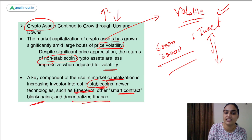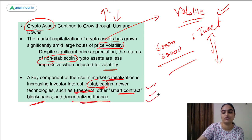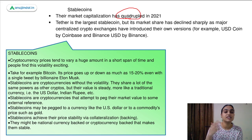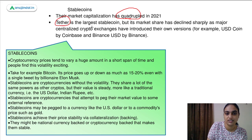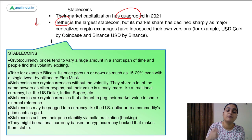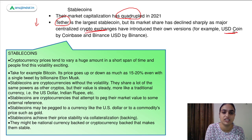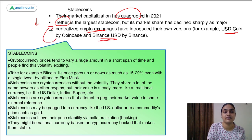Let's discuss each one. First, talking about stablecoins — their market capitalization has quadrupled. Tether is the largest stablecoin, although recently we are seeing a decline because more new competitive stablecoins are emerging. Every crypto exchange is coming with its own version of a stablecoin: Coinbase has USD Coin, Binance has Binance USD. Because of this, the competition for Tether is increasing, but it's still the largest stablecoin.